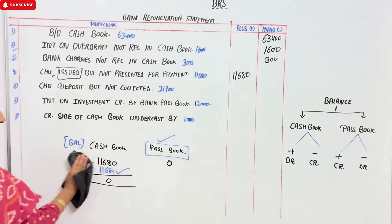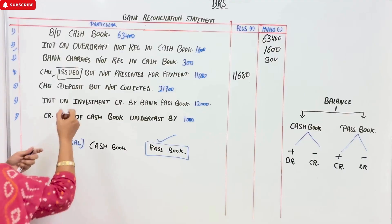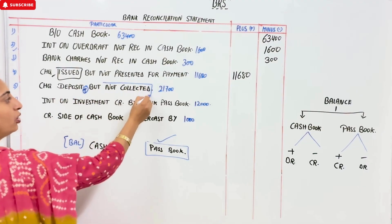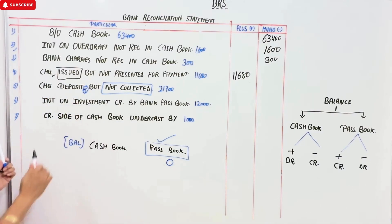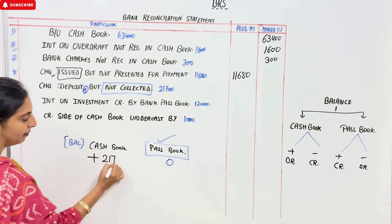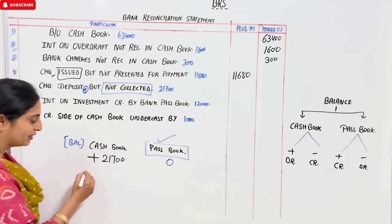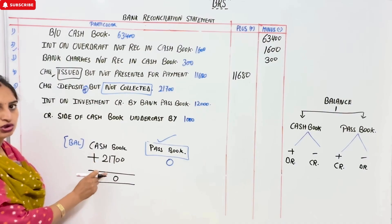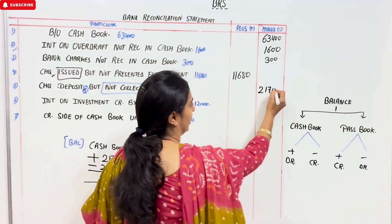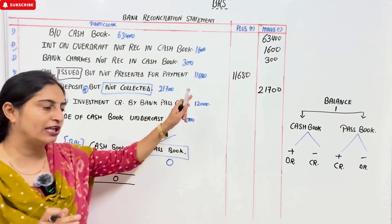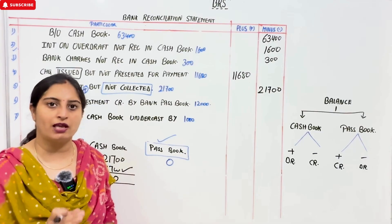Next entry: check deposited but not collected — not collected, not cleared. It is talking about pass book. Check deposit means plus — you have sent plus. But not collected, not presented in pass book, so pass book is zero. Cash book is plus. If pass book total is zero, then we will do the opposite. So this will go to the minus column. In your book, this is done with the same concept as our last illustration.